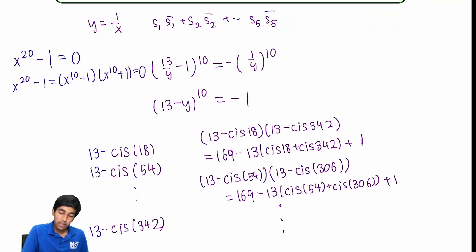And in total, for each of these terms, we get 170, right, minus 13 times something, cis. Now, here's, like, the really clever thing. All in all, we have 170 times 5, right? And then we're subtracting 13 times cis of 18 plus cis of 54 plus all the way until cis of 342. Subtracting all these values. It turns out these values all sum to 0.